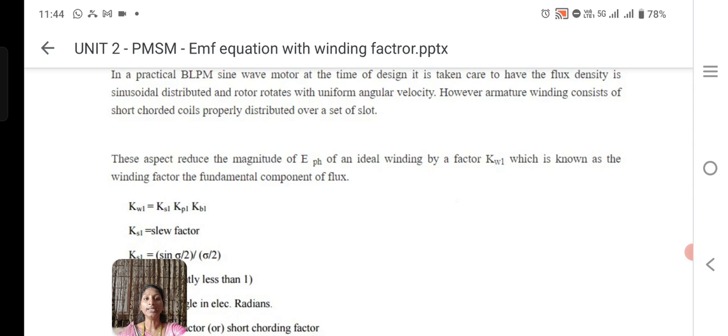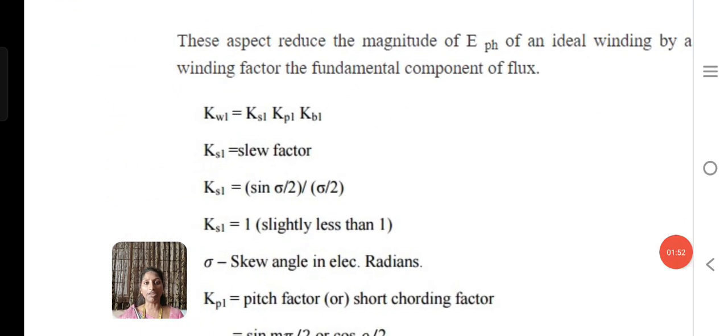Here we have three factors: Kw1 equals Ks1 Kp1 Kd1, where Ks1 is the skew factor, Kp1 is pitch factor, and Kd1 is distribution factor. It can also be mentioned as Kb1.